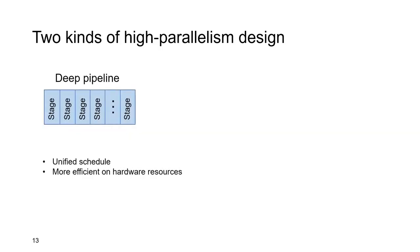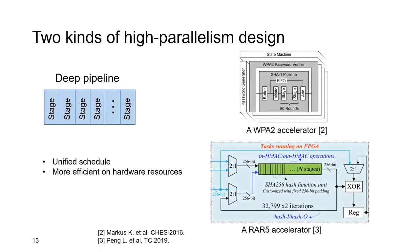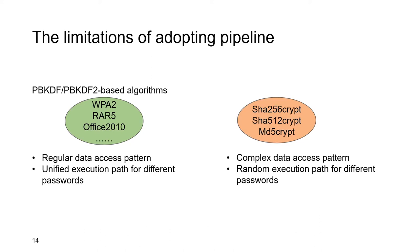Another kind of design is to build the accelerator with a deep pipeline. By using a deep pipeline, the schedule of different passwords is unified. As a result, it needs less control logic than the multicore design, and is thus more efficient. This kind of design has been adopted by many researchers and achieves good performance and energy efficiency — for example, the WPA2 accelerator presented at CHES 2016 and the bcrypt accelerator presented in TC 2019. However, deep pipeline has its limitations. Almost all pipeline-based accelerators target PBKDF-based algorithms, which have regular data access patterns and unified execution paths.